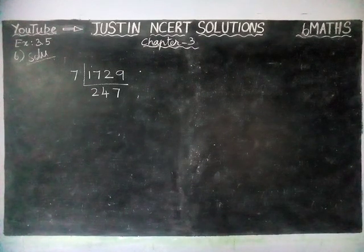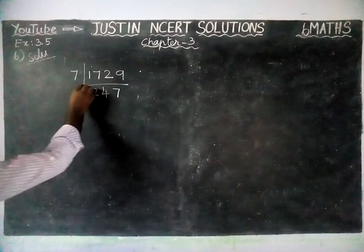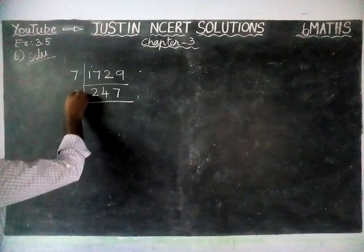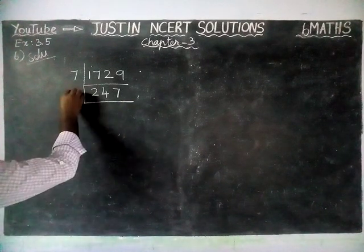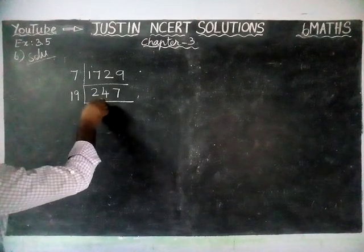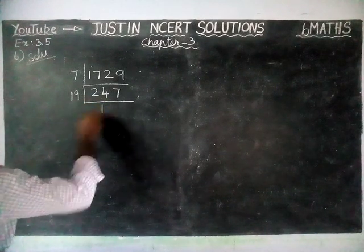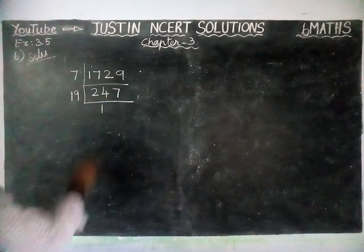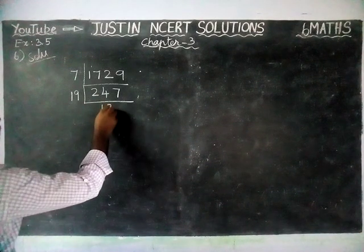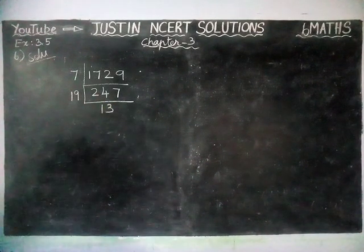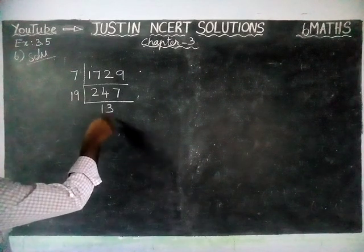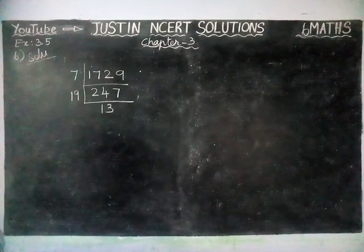Next, 247 is there. We are going to divide it by 19. In 24, we have one 19, remaining 5. In 57, three 19s are 57. So now we get 13. 13 is a prime number; we cannot divide it further.